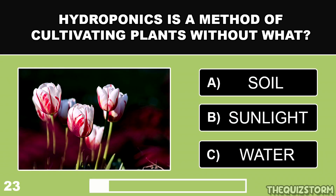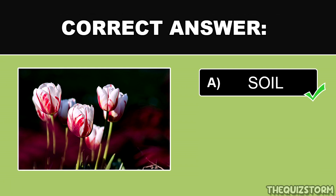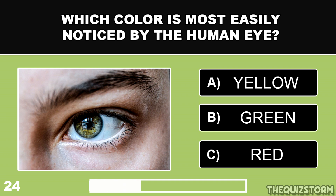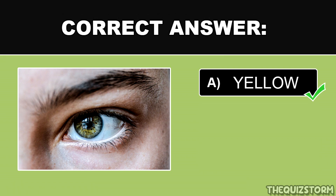Hydroponics is a method of cultivating plants without what? And the correct answer is soil. Which color is most easily noticed by the human eye? And the correct answer is yellow.